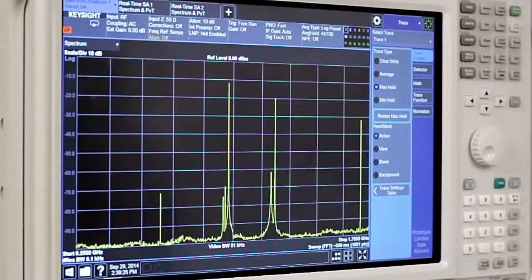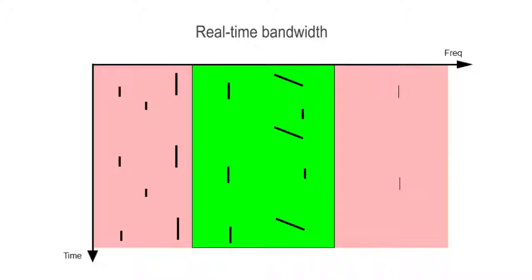Next, let's review what the real-time mode is. In this example, the LO is fixed at a specific frequency and we digitize a large amount of spectrum. The obvious advantage is that the analyzer is not missing any data in its real-time bandwidth.